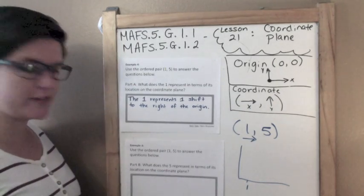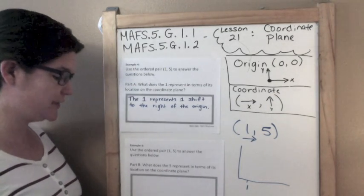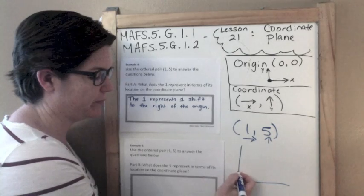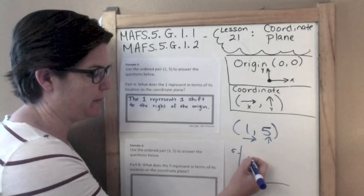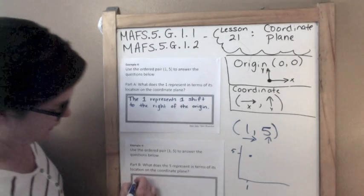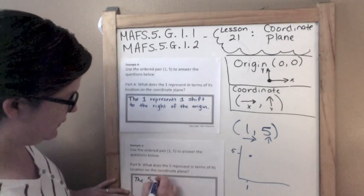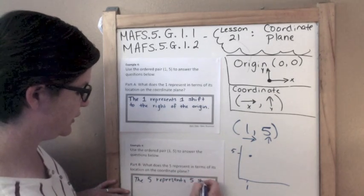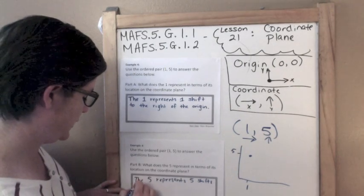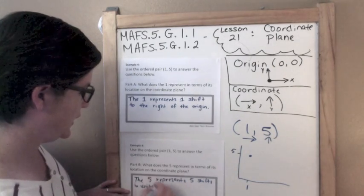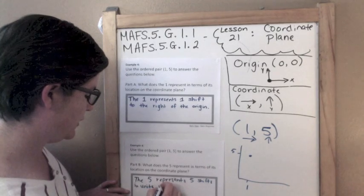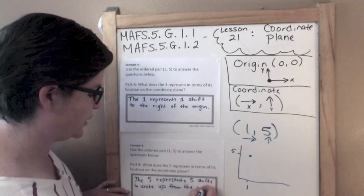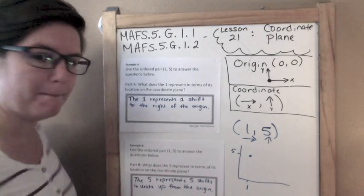All right, part B. What does the five represent in terms of its location on the coordinate plane? So the five would be how many we're going up. So it would be five that we're moving up, and that's where that point would go. So the five represents five shifts in units, is what I was going to say on the first one, and units up from the origin. That is it, motivational message time!